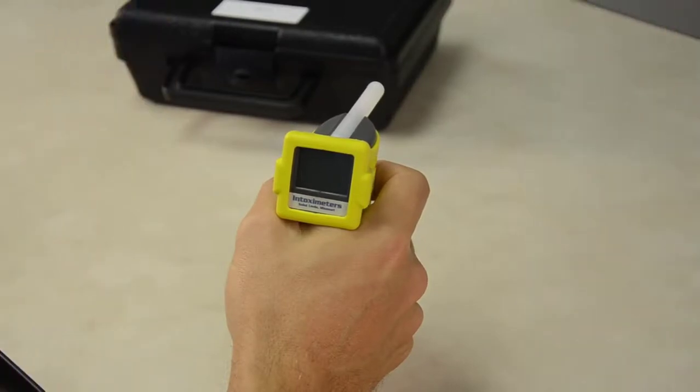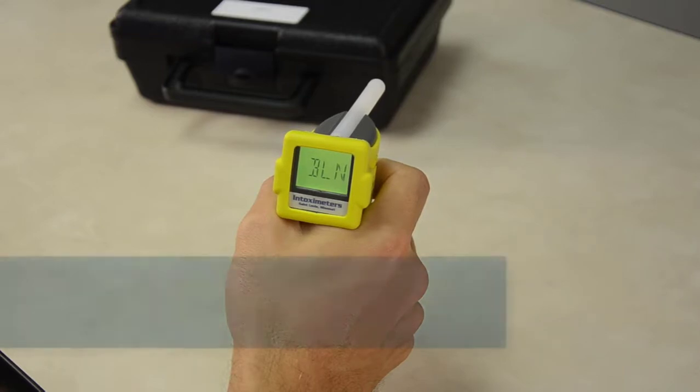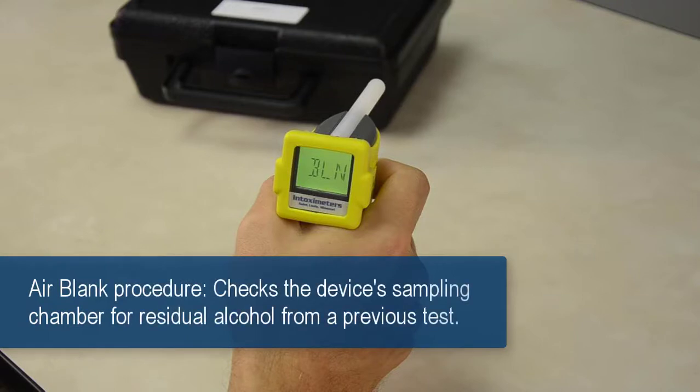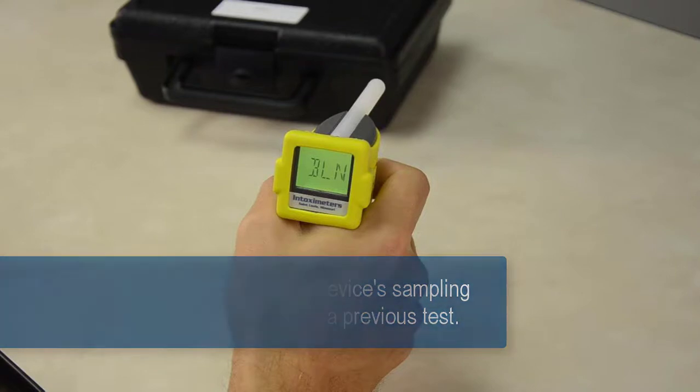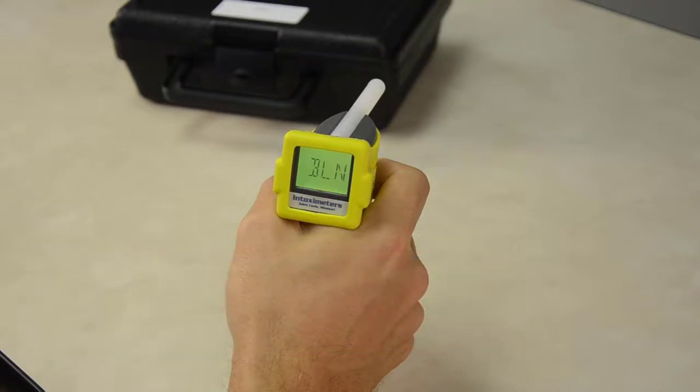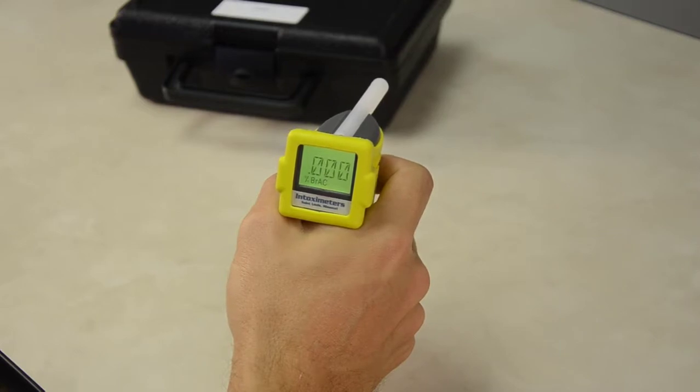Some versions of the AlkaSensor FST will display BLN, which means the instrument is performing an automatic airblank procedure. An airblank is a procedure that checks the device's sampling chamber for any residual alcohol that may remain from a previous test. If the airblank shows no residual alcohol, the operator will see .000 in the display and the instrument is ready to perform the next test.